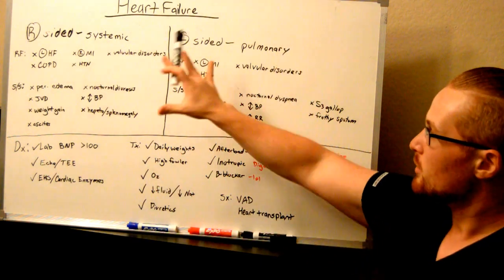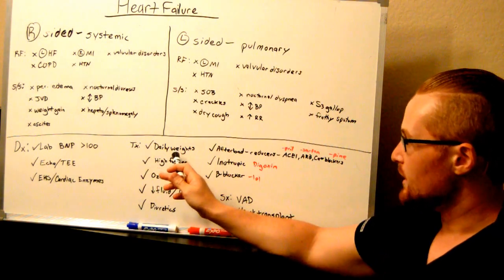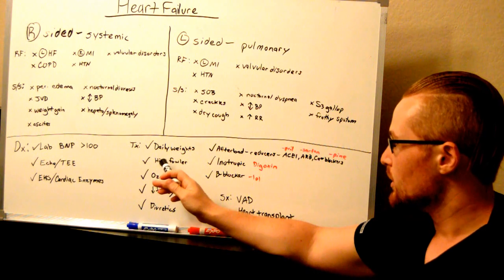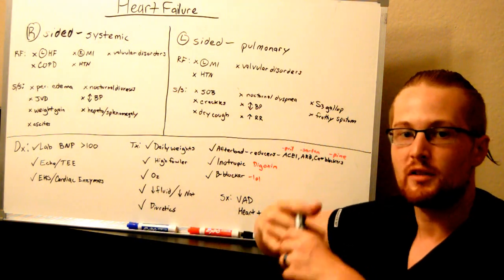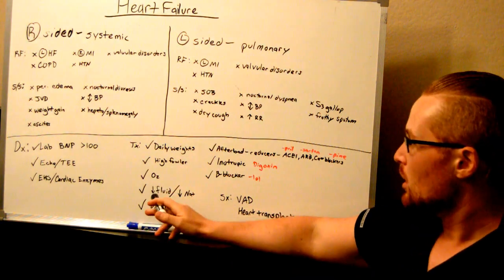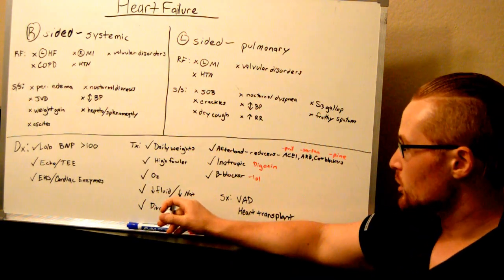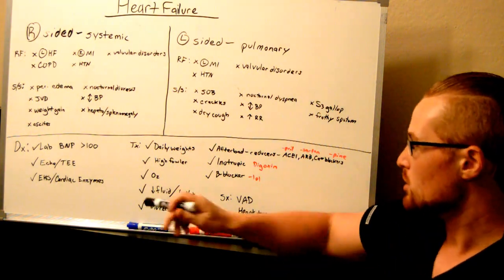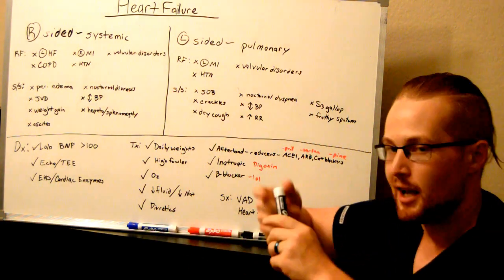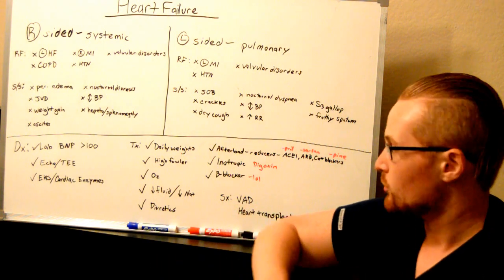Treatment for these patients, well they have a lot of fluid backed up in them so you'll want to get daily weights to see how their fluid balance is doing. These patients, you want to have them high Fowler's positioned with some O2 so they're getting good oxygenation. You want to decrease their fluids and give them sodium restriction so they're not getting more fluids in their body and holding on to more fluids. You want to give them diuretics to help urinate out extra fluids.